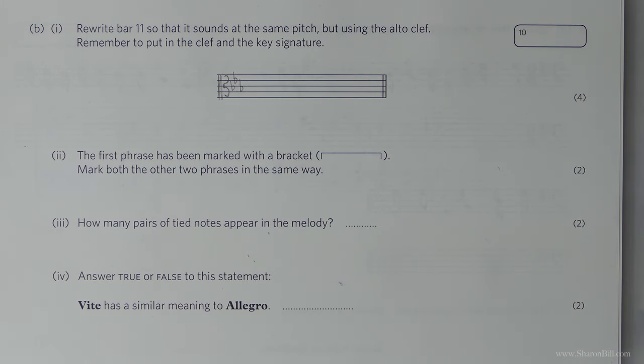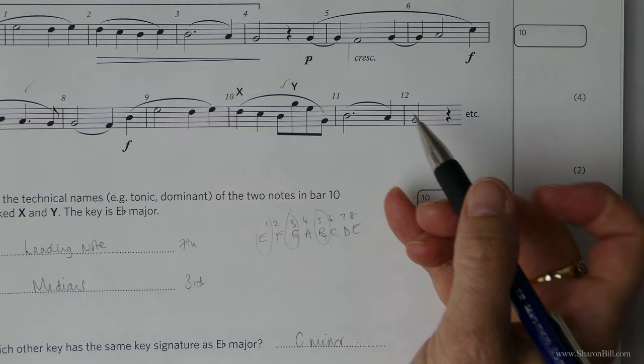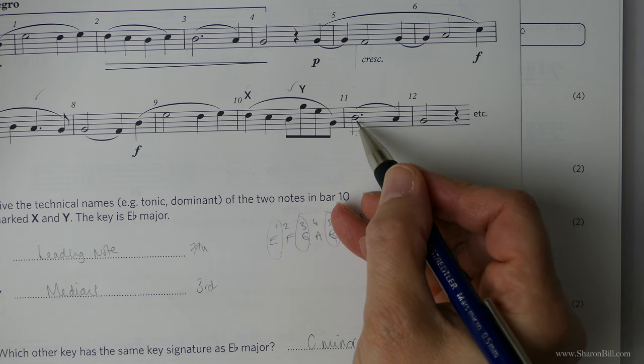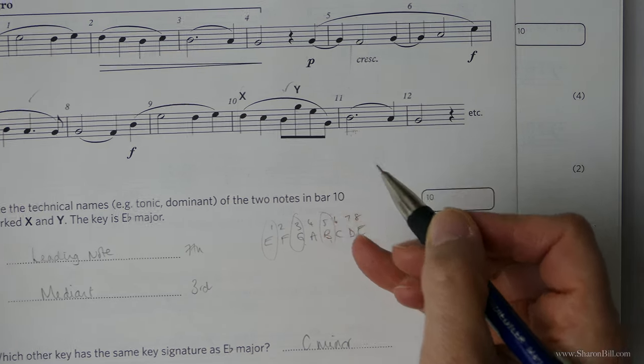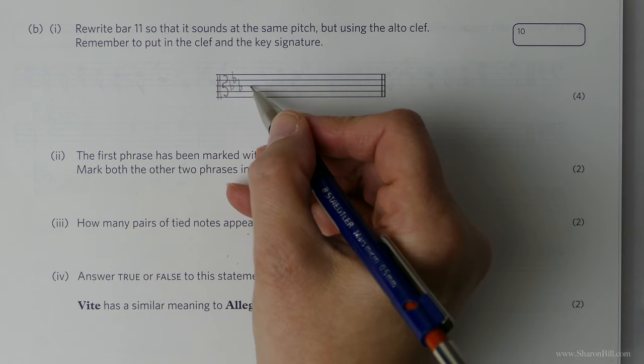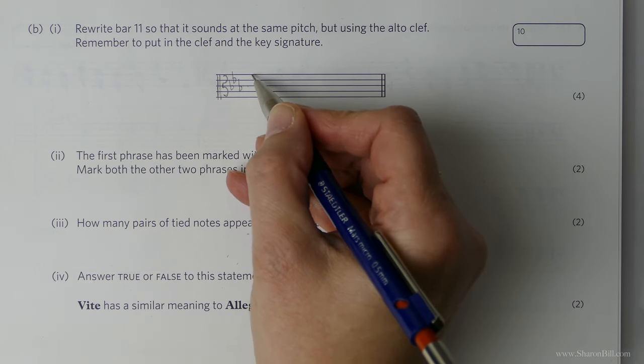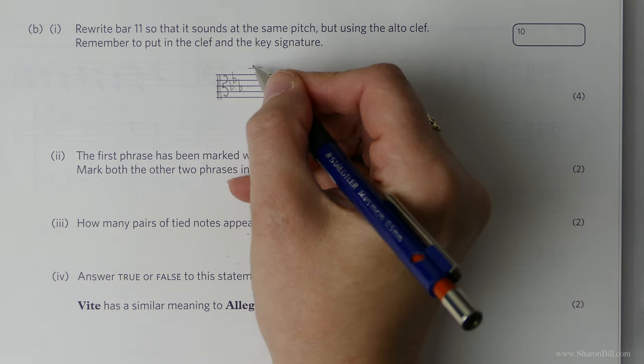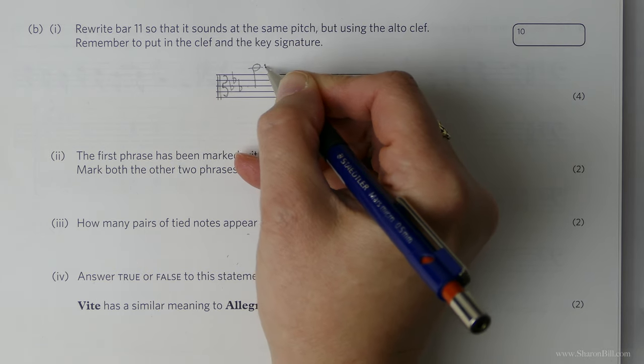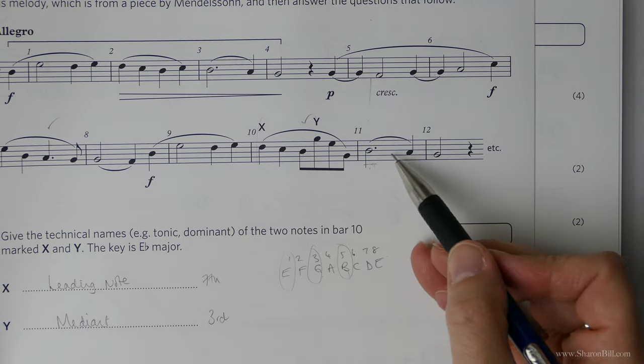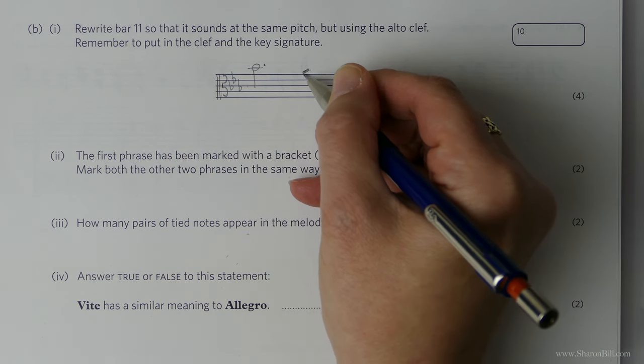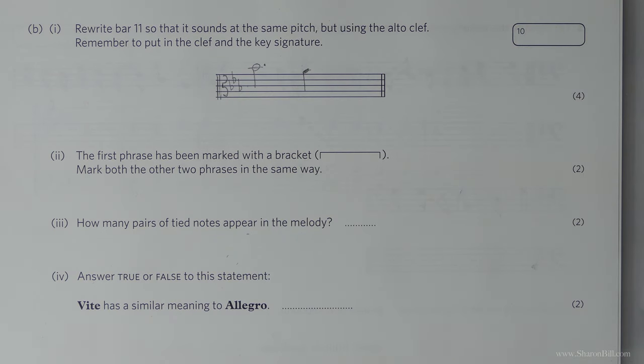Now then let's look at bar eleven. Keeping middle C as our sort of anchor point we can see that we're on the B above that, a seventh above that. So let's now work that from here. There's middle C and we want a seventh above: 1, 3, 5, 7. That's the B. We can do that as a dotted minim, a dotted half note. And then if you just look we're just coming down one step next door and so that will bring us to this note here. And so that does exactly the same job but now in the alto clef.